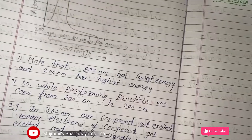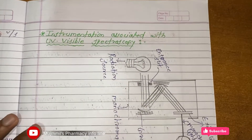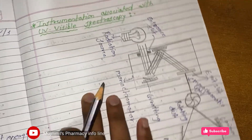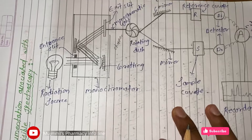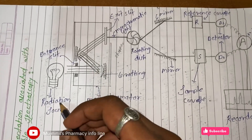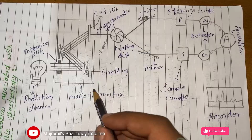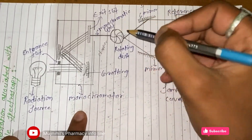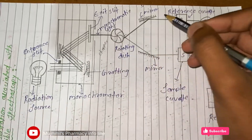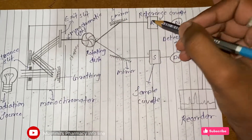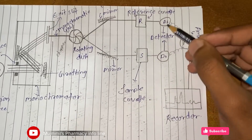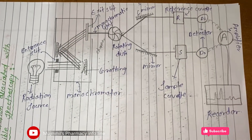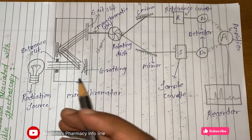Now let's see the instrumentation of UV-Visible spectroscopy. You should draw this diagram in your exam for better marks. As you can see in the diagram, there is a radiation source, a monochromator, an entrance slit, an exit slit, monochromatic light, a chopper, two mirrors, a reference cuvette, a sample cuvette, two detectors, an amplifier, and a recorder.